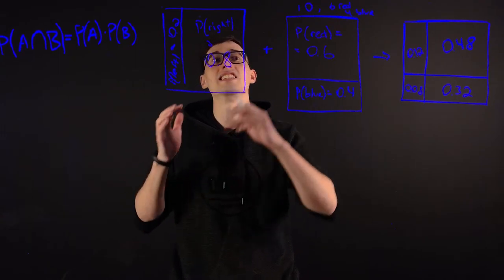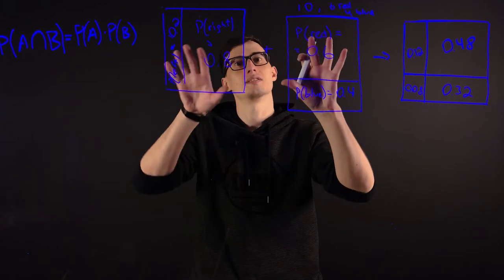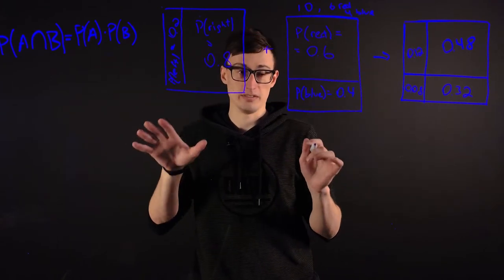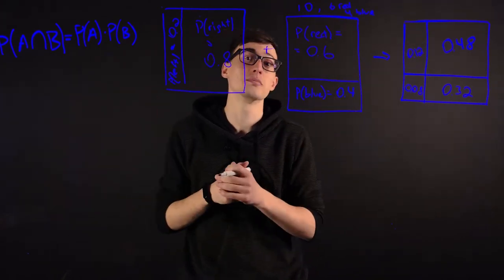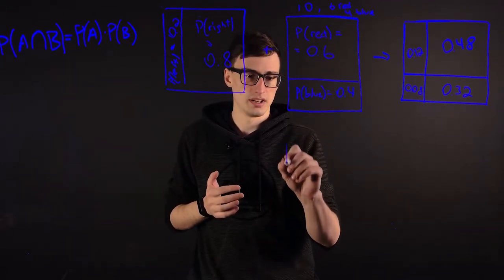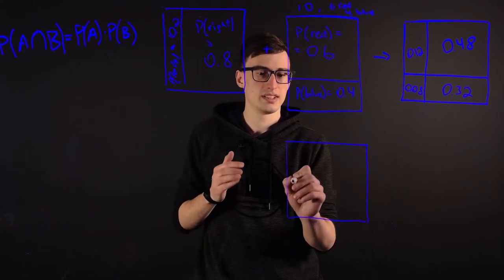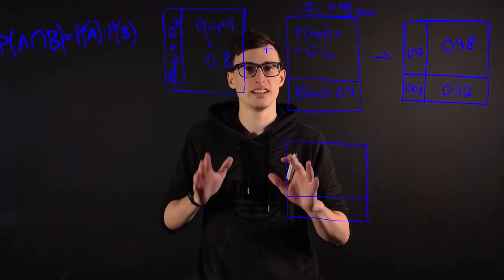When we have a conditional probability, when one event is based on the outcome of the first event. So, this is usually used in medical testing. So let's set up the same example with the same numbers.